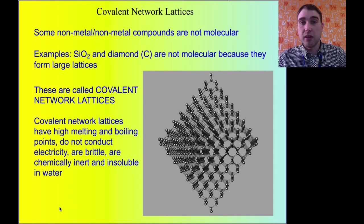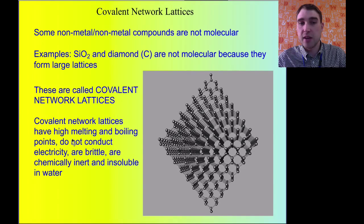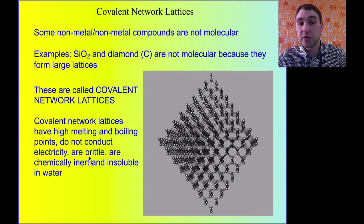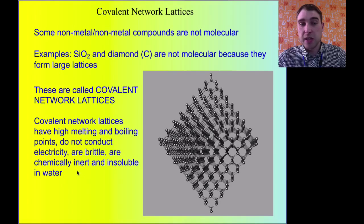Covalent network lattices are a little different. You get covalent bonding between lots and lots of atoms, forming big three-dimensional structures. Because these are held together with strong covalent bonds, they have high melting and boiling points. Usually they don't conduct electricity because there are no free charges that can move around. They're often brittle because you can cleave them along their structure. They're usually chemically inert, meaning they don't react readily, and they're usually insoluble in water because there's nothing the polar water molecule can act on.